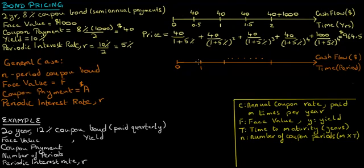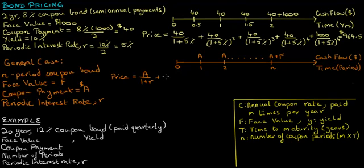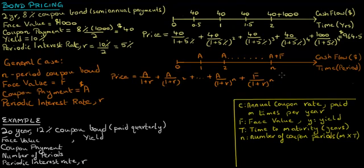Suppose today is time zero. At the end of the first period, the bond holder receives a coupon payment of A dollars. Similarly, at the end of the second period, another coupon payment of A dollars is received, and this goes on so that at the end of each period for the next N periods, the coupon payment of A dollars is received. At maturity of the bond, the face value will also be paid out. Since the periodic interest rate is denoted by R, the price of this bond is calculated by discounting the coupon payment of A dollars at the periodic interest rate over each period, up to period N, plus discounting the face value over N periods.